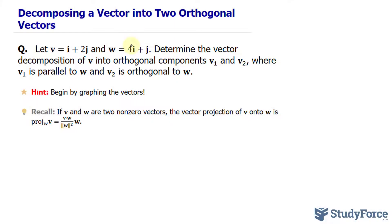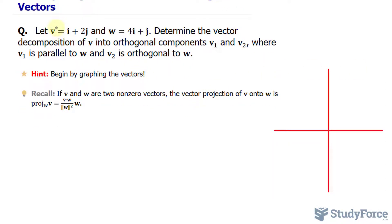Essentially, what they're asking here is to find the vector projection of V onto W. Let's begin by graphing the vectors. We'll use an X-Y plane and start with vector V. Vector V has the components 1 and 2.